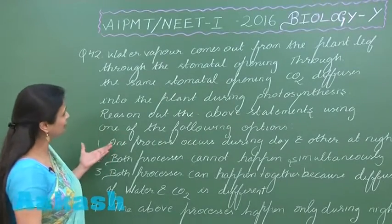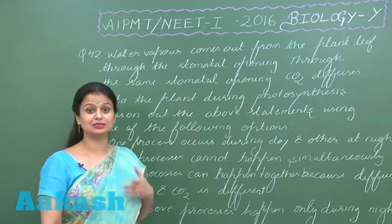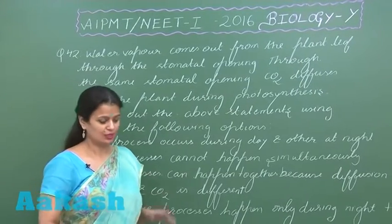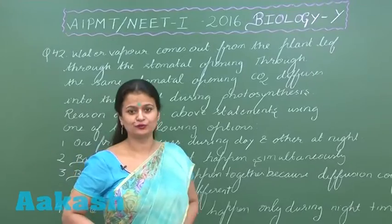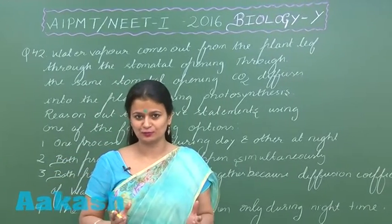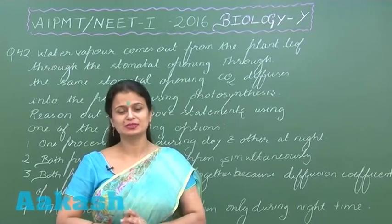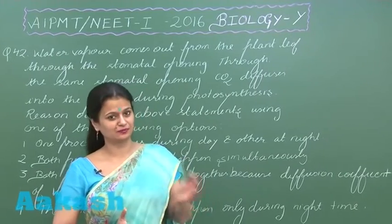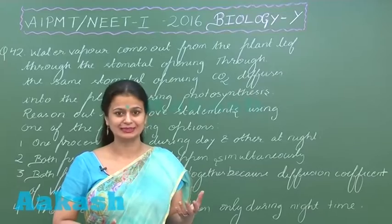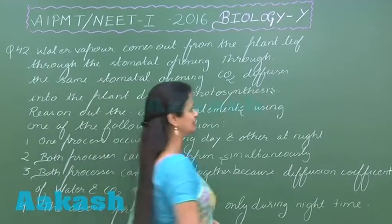In equation number 42, it has been asked about transpiration and photosynthesis. Transpiration is the loss of water in the form of water vapors, and photosynthesis occurs during the daytime. Both processes can occur during the daytime.